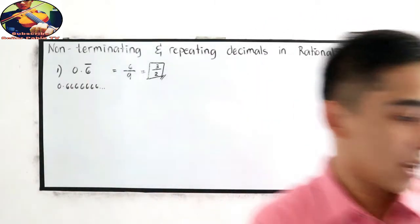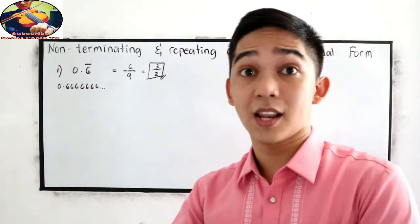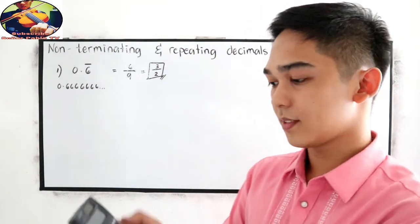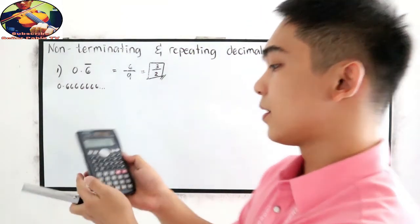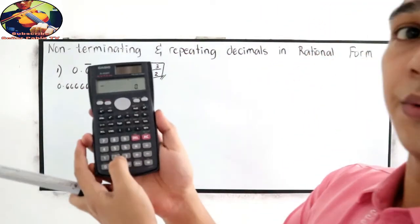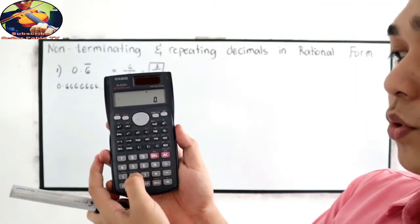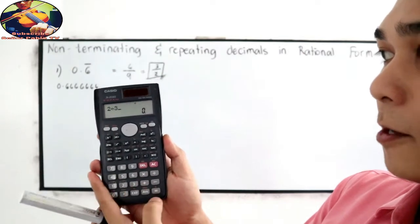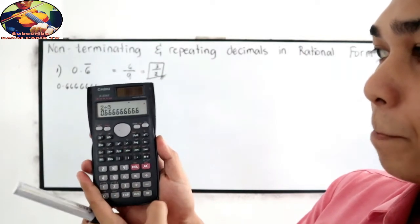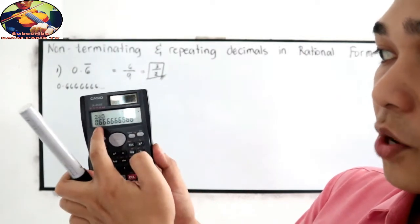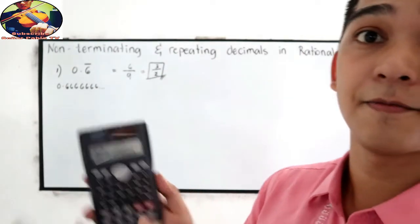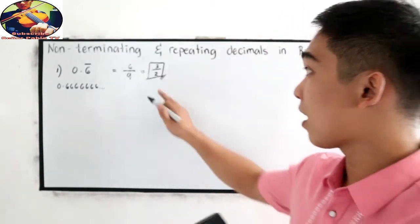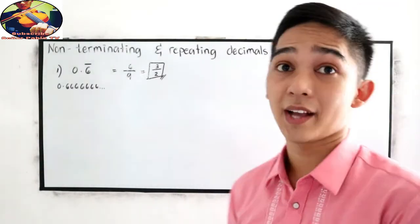Let me show you using my calculator. So, 2 divided by 3. That means our answer is correct.